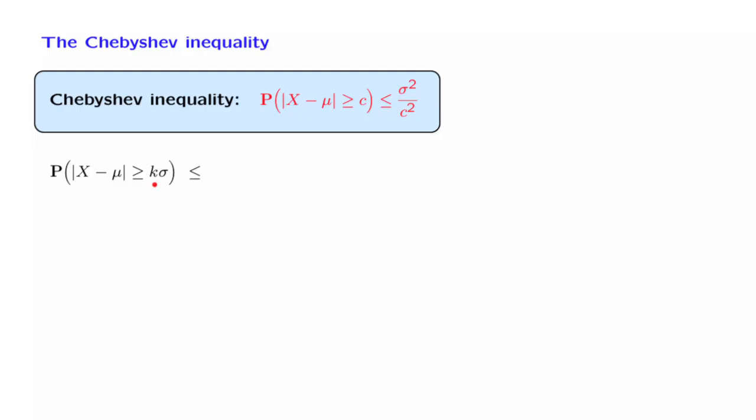Using the Chebyshev inequality with C replaced by k times sigma, we obtain sigma squared over c squared, which in our case is k squared times sigma squared, which is 1 over k squared.